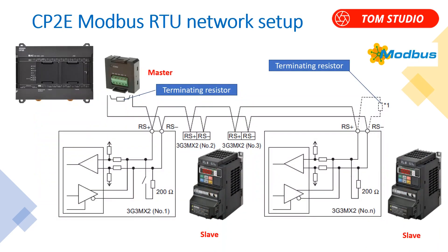CP2e Modbus RTU communications setup. CP1L and CP2e both support the simple Modbus RTU master function. In this example, we utilize this function to implement Modbus RTU communications from the PLC to 3G3 MX2 VSDs. The PLC takes the master role, with the MX2 VSD as the slave device. We use the CP1W CIF11 option board on the PLC and RS485 two-wire to link slave devices together.